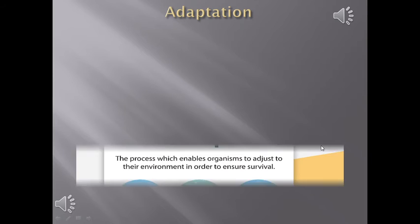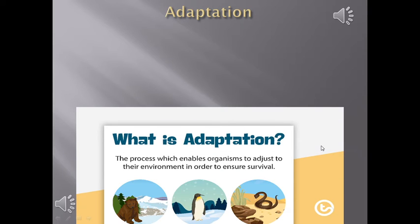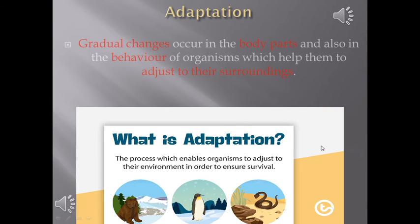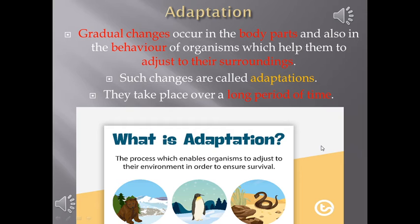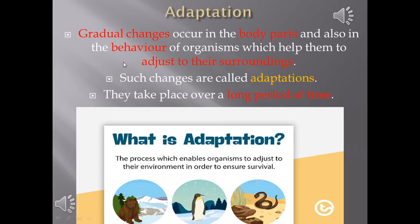The answer to all these questions is adaptation. So, what is adaptation? Adaptation is the process which enables organisms to adjust to their environment in order to ensure survival. Gradual changes occur in the body parts and also in the behavior of organisms which help them to adjust to their surroundings. Such changes are called adaptations. They take place over a long period of time. Remember that these changes are gradual — they don't happen all of a sudden. They take a very long period of time to occur, and can be either in the body parts or in the behavior of the organism.